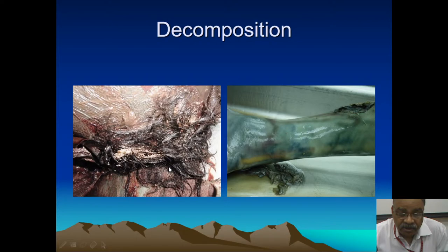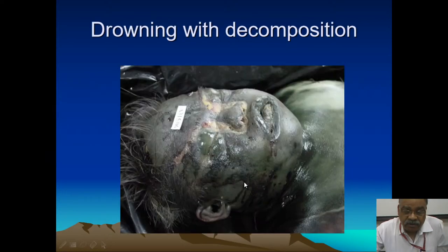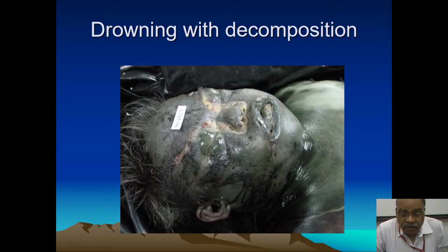A body recovered from drowning shows dried froth. When a body is in water, decomposition is not as fast as on earth, but as soon as it is taken out from water, decomposition is very rapid, with discoloration of skin and purging of fluids. In drowning cases, diatoms are taken and the respiratory tract is examined for bacterial flora, vegetable flora, and diatoms to confirm ante-mortem drowning.